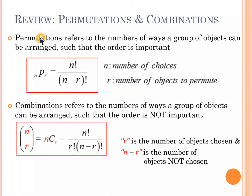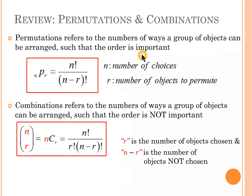Going back to permutations — the order is important. So if I have two students, Alice and Brad, I could have Alice and Brad or Brad and Alice. Those are two different permutations where the order is important. However, for a combination the order is not important. If I send Alice and Brad to the office, that's the same as sending Brad and Alice. The order doesn't matter — it still counts as just one group.